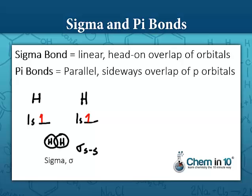Pi bonds, on the other hand, are parallel sideways overlap of p orbitals. So here we would have sideways overlap of p orbitals and that would be a pi bond.